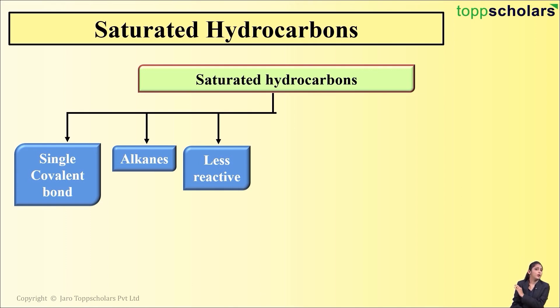But what is the general formula of alkanes? Yes, alkanes are represented by the general formula CnH2n+2, where n stands for the number of carbon atoms.